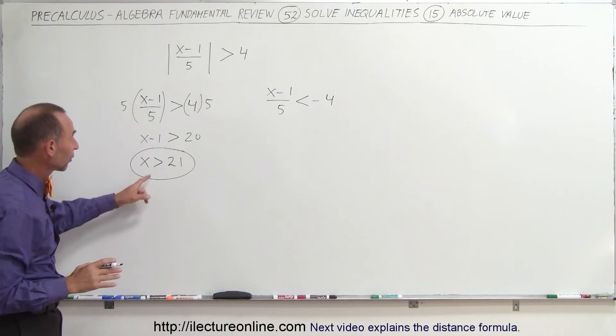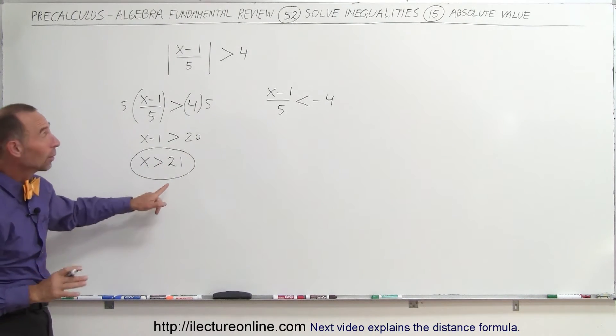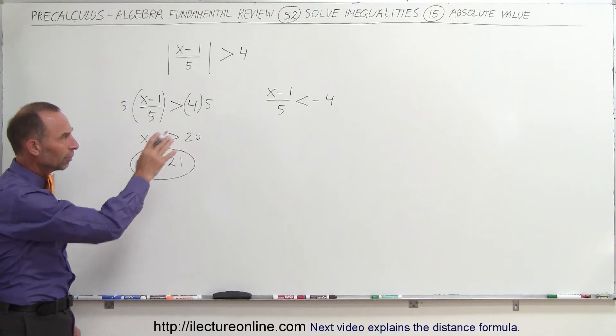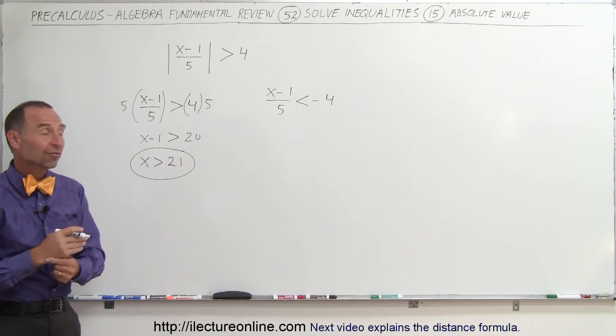So all values for x that are greater than 21, not including 21, will satisfy this inequality. But the other possibility is that it's less than negative 4.